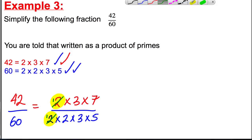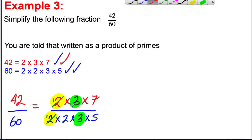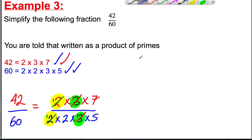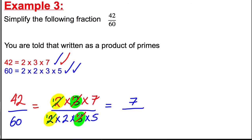There is also a common factor of 3 — a 3 on top and a 3 on the bottom — so we divide top and bottom by 3 and get 1s. Our simplified fraction: 1 times 1 times 7 is 7 on top. On the bottom, 1 times 2 times 1 times 5 is 10. So 7 tenths is our simplest equivalent fraction.